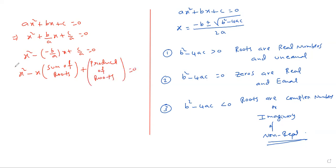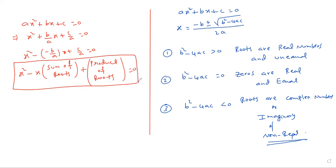So this is the general structure of a quadratic polynomial: x² − (sum of roots)x + (product of roots) = 0.